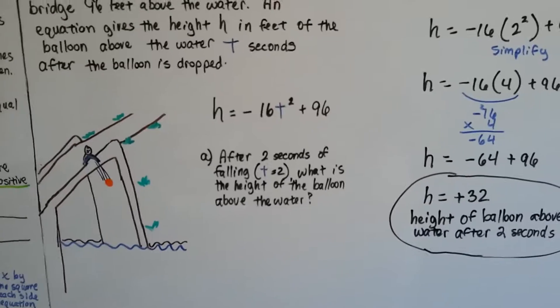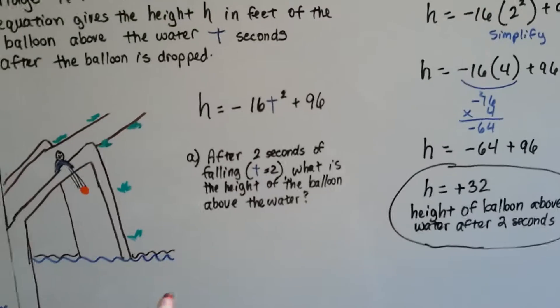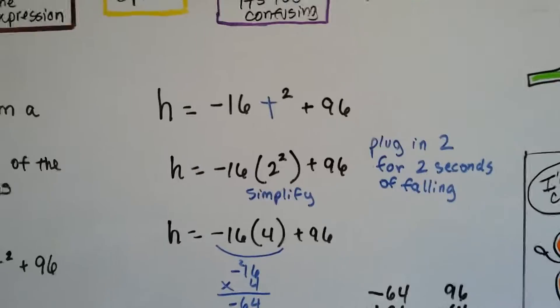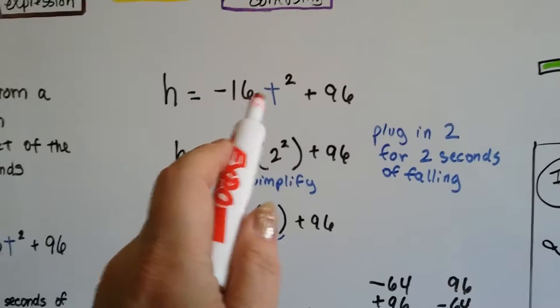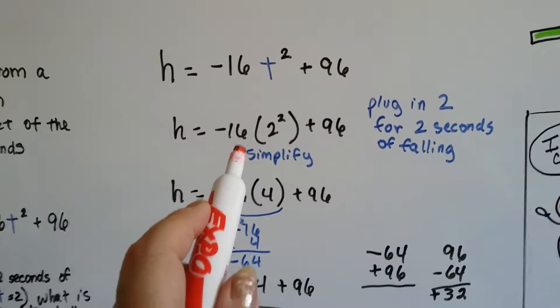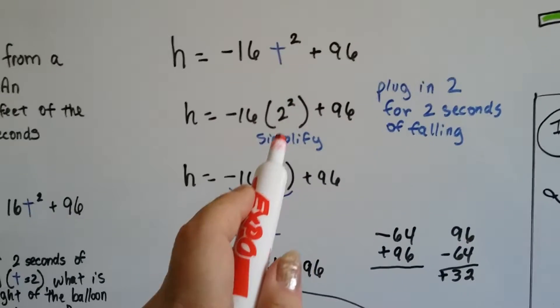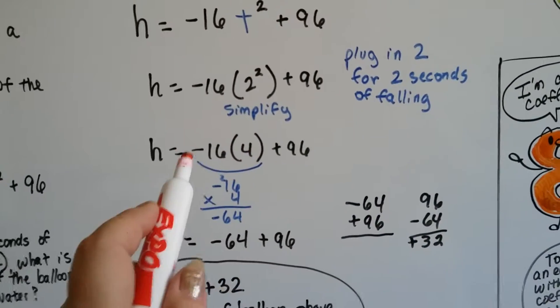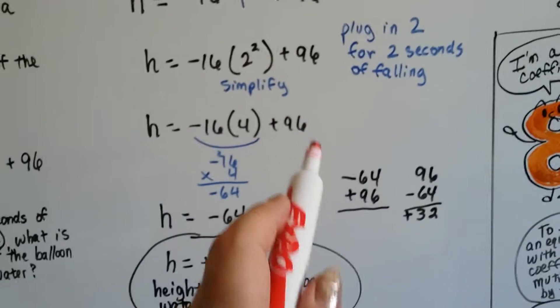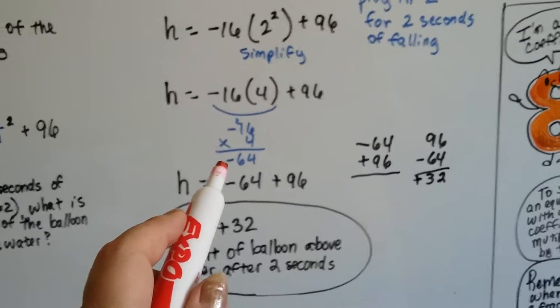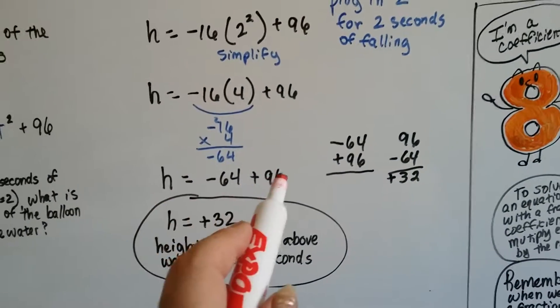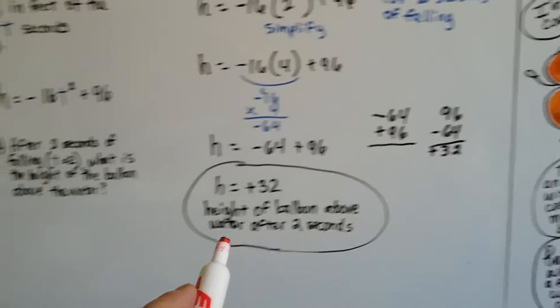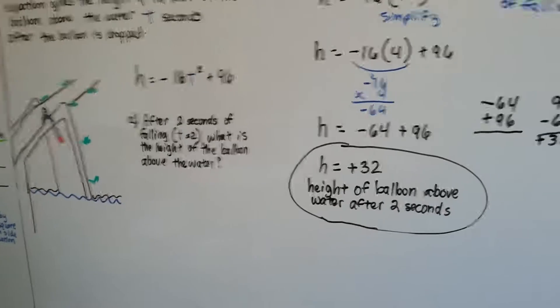Where is the balloon above the water? We plug in the 2 for t in our equation, and instead of negative 16 t squared, we now have negative 16 times 2 squared. We simplify that to a 4. 2 times 2 is 4. We have negative 16 times 4 plus 96. Negative 16 times 4 is negative 64. We add that to the 96, and we've got 32 as the height of the balloon above the water after two seconds.